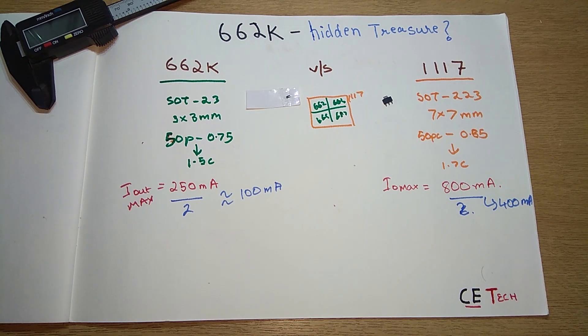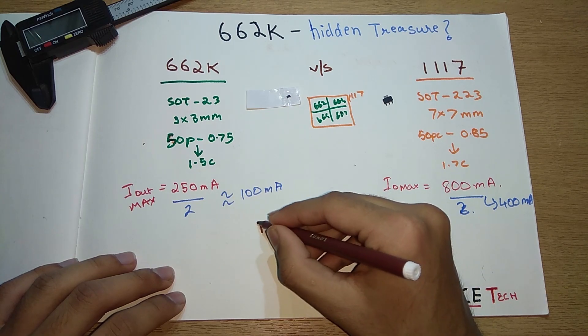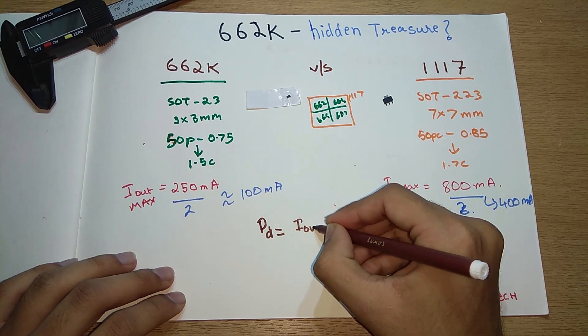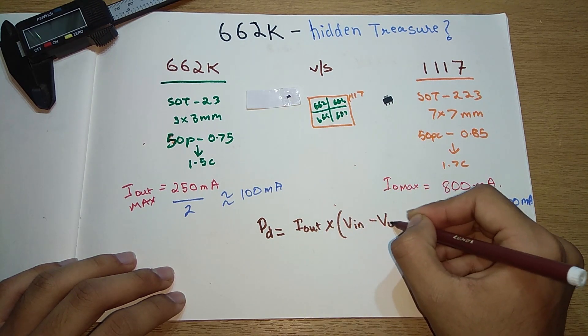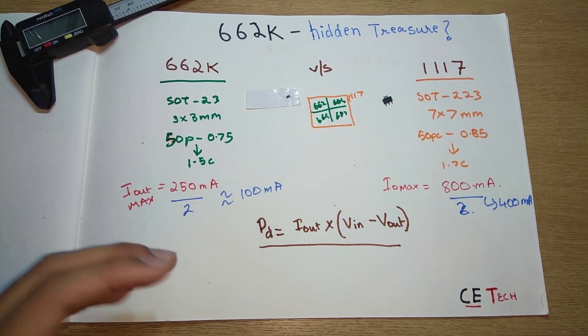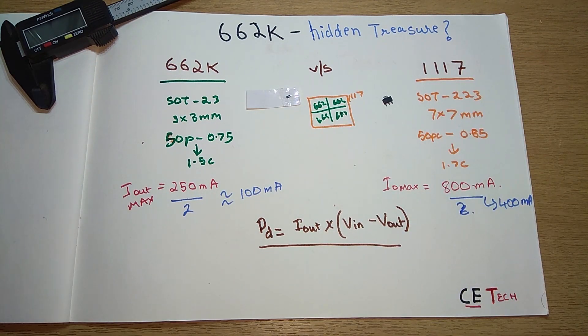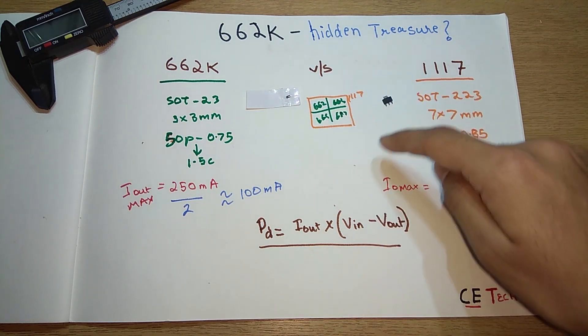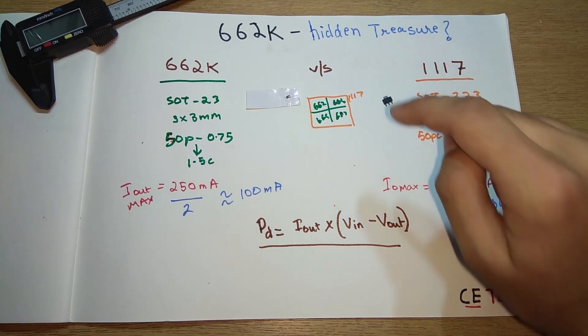Now talking about heat, there's a really basic formula for heat dissipation where the power dissipated is equal to I_out times (V_in minus V_out). This is the formula we use for calculating how much power would be dissipated during the conversion. This voltage gets lost because of the conversion, multiplied by the output current—that's the power dissipated in the form of heat.